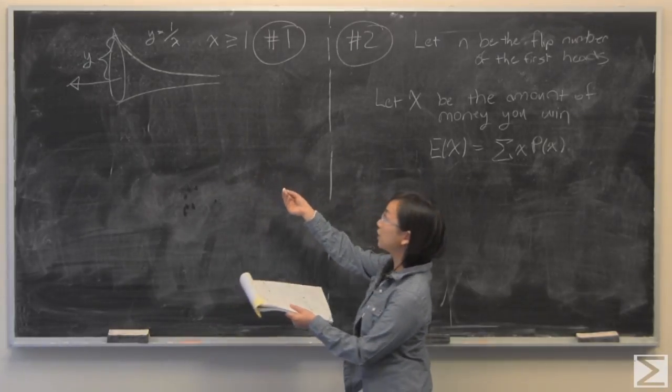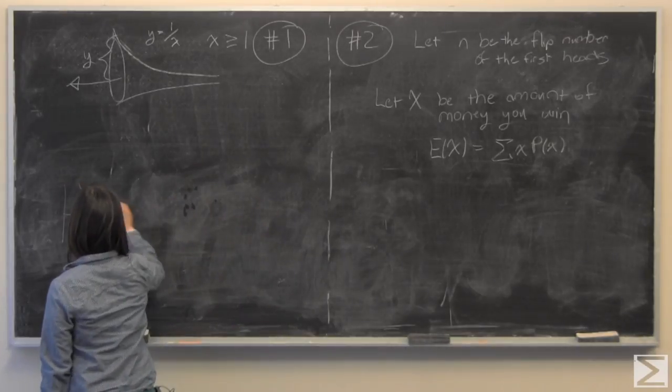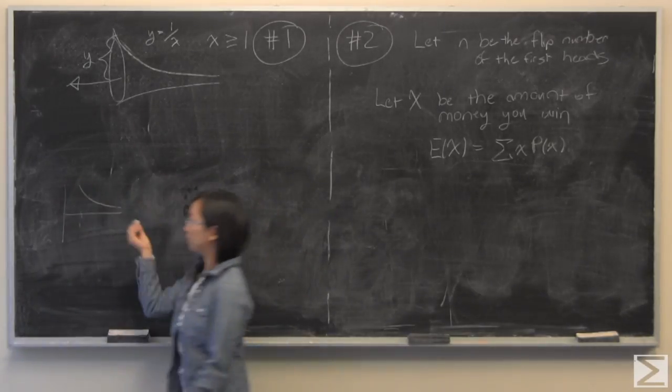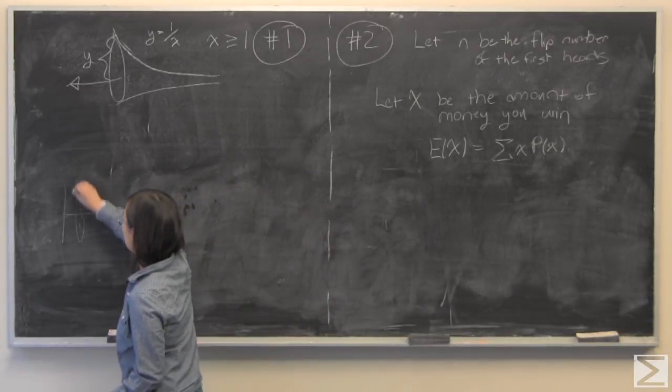You're given a function y is equal to 1 divided by x, and as we all know that will look like this if x is going from 1 to infinity, and this function is rotated around the x-axis to make this horn-like shape.